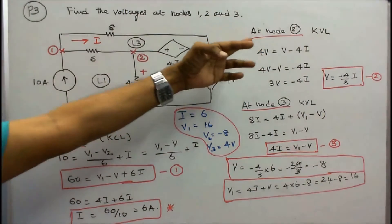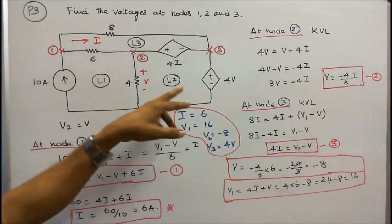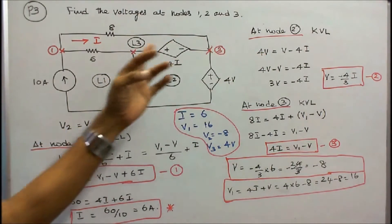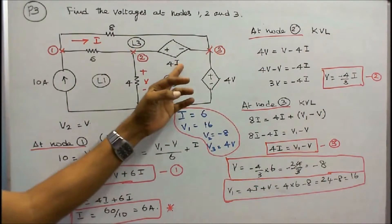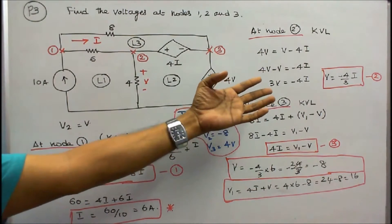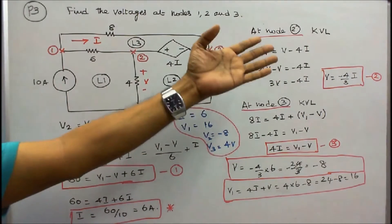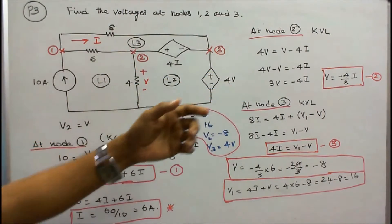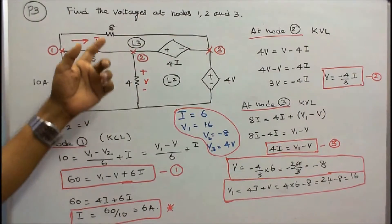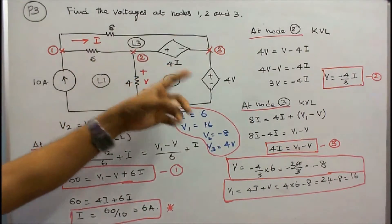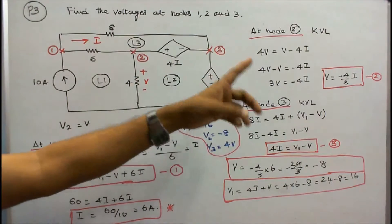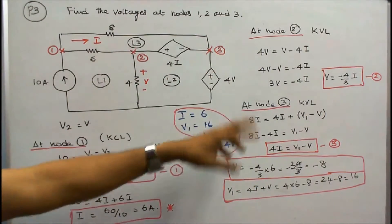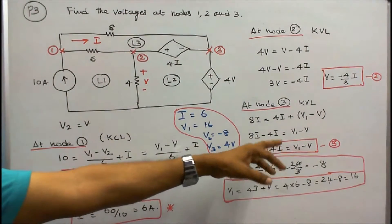Next I take node 2 and apply Kirchhoff's voltage law in loop 2: 4V is equal to V2, and V2 is equal to V minus 4I. Simplifying: V is equal to minus 4/3 into I. That is equation 2. Again I take node 3 and apply Kirchhoff's voltage law at loop 3: 8I is equal to 4I plus V1 minus V2. Writing V2 as V and simplifying: 4I is equal to V1 minus V. That is equation 3.